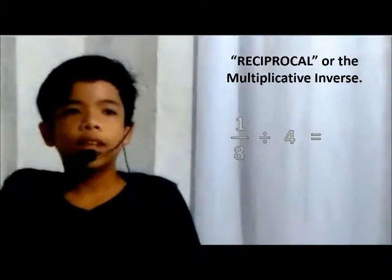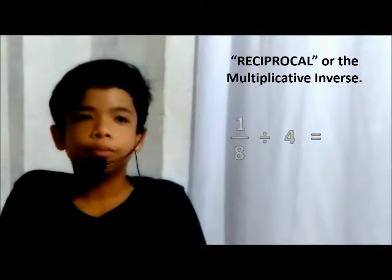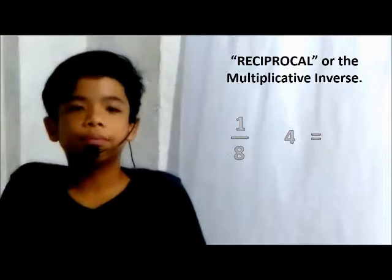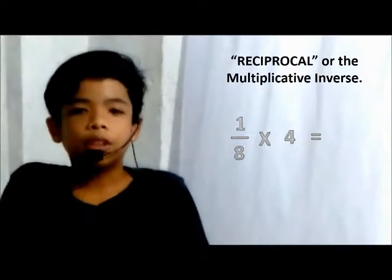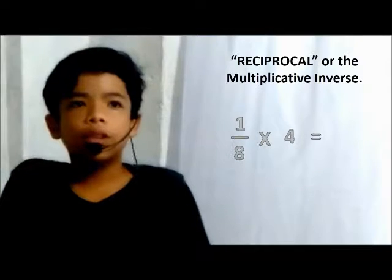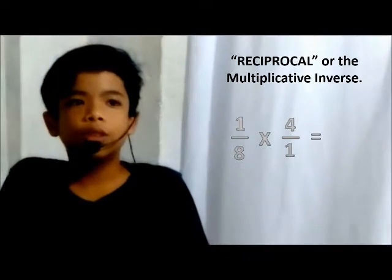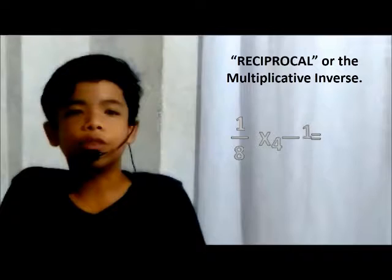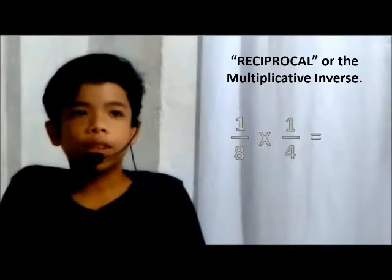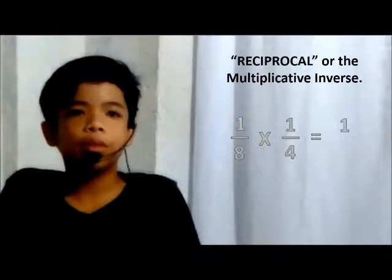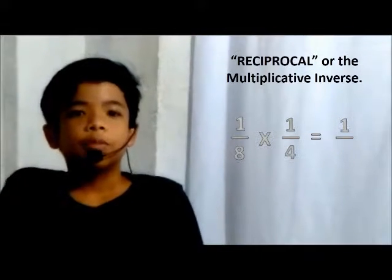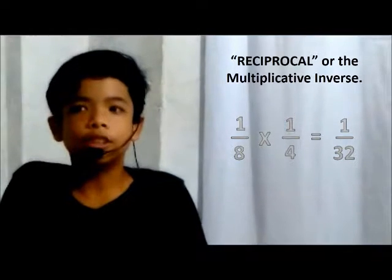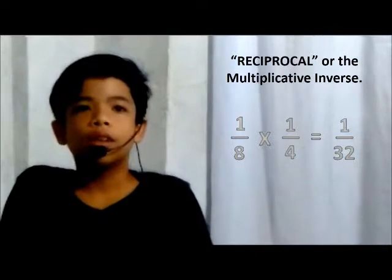Let's try another one: 1 eighth divided by 4. We leave the dividend, 1 eighth, alone. Change the operation to multiplication. We know that a whole number has a denominator of 1, so 4 is also equal to 4 over 1. The reciprocal of 4 over 1 is 1 fourth. Multiply the two numerators: 1 times 1 equals 1 — this will be the numerator of our answer. Multiply the two denominators: 8 times 4 equals 32 — this will be the denominator of our answer. So our answer is 1 over 32.